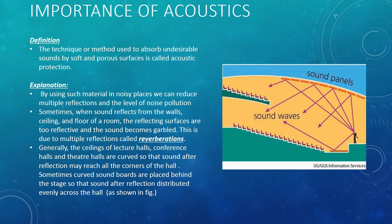Acoustics refers to the technique or method used to absorb undesirable sounds with soft and porous surfaces — this is called acoustic protection. As studied previously, there can be multiple reflections of sound. This multiple reflection causes the gobbling of sound. Multiple reflection can be stopped by using soft and porous materials. By using such materials in noisy places, we can reduce multiple reflections and the level of noise. This multiple reflection of sound is called reverberation.